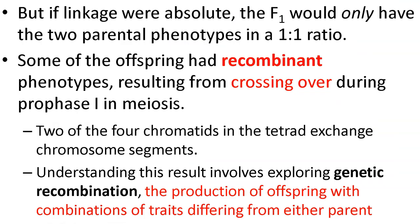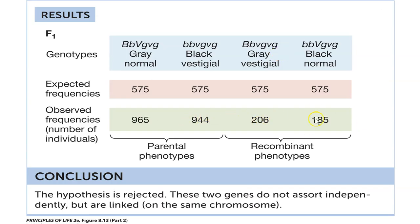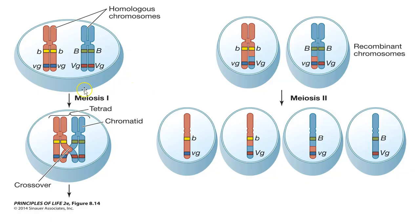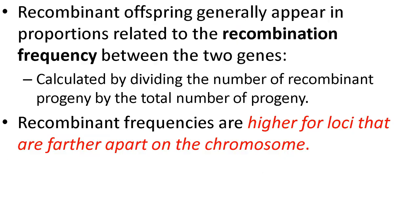If linkage were absolute, we would only see the parental phenotypes. But it wasn't 1:1 — we did see some recombinants due to crossing over. Crossing over allows us to shuffle those genes. The production of offspring with combinations of traits differing from either parent are known as genetic recombination, and of course that happens in meiosis. Right there you can see crossing over and how the genes have been exchanged between non-sister chromatids.